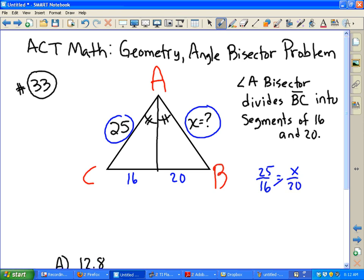then we're going to have 16X is equal to 20 times, if we do a cross product, 20 times 25. This would be 500.